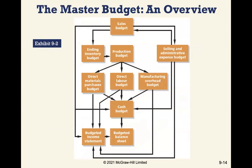The master budget contains everything: the sales budget, which is used to determine the production budget based on the ending inventory budget. From there we can budget for direct materials, direct labor, and manufacturing overhead. We also budget for cash — when cash is coming in and going out. The master budget also includes budgeted balance sheets and budgeted income statements, plus sub-budgets for production, sales, and administration.